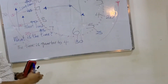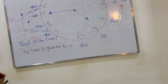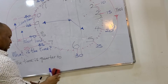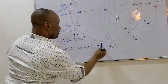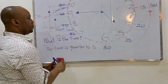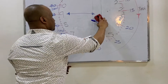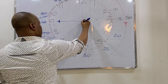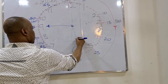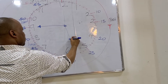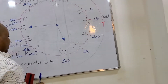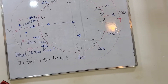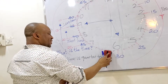What is the time? The time is quarter to five. What is the time? The time is quarter to six.